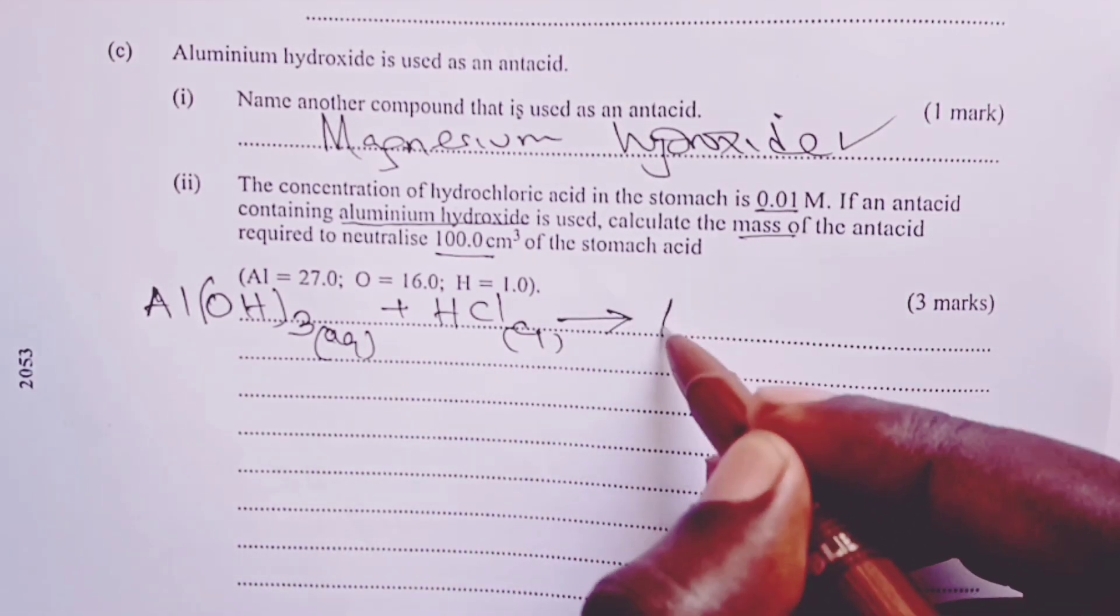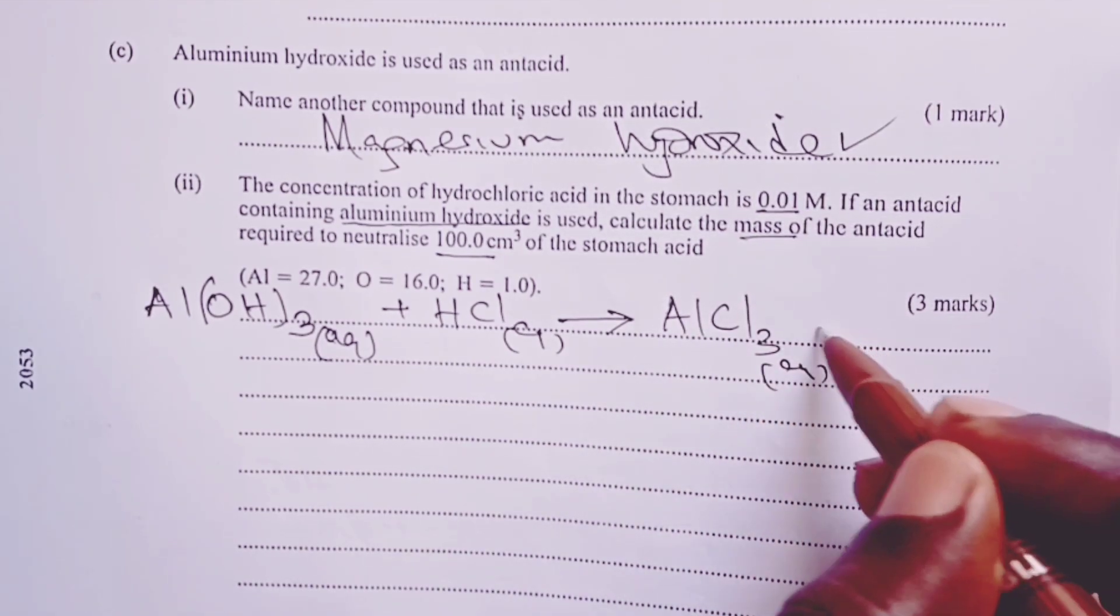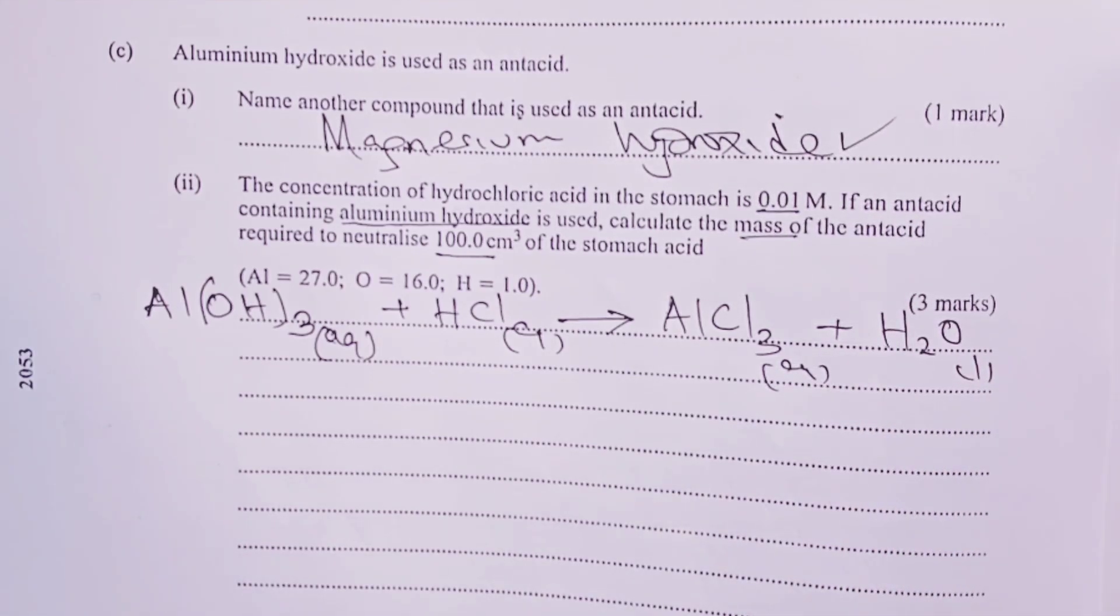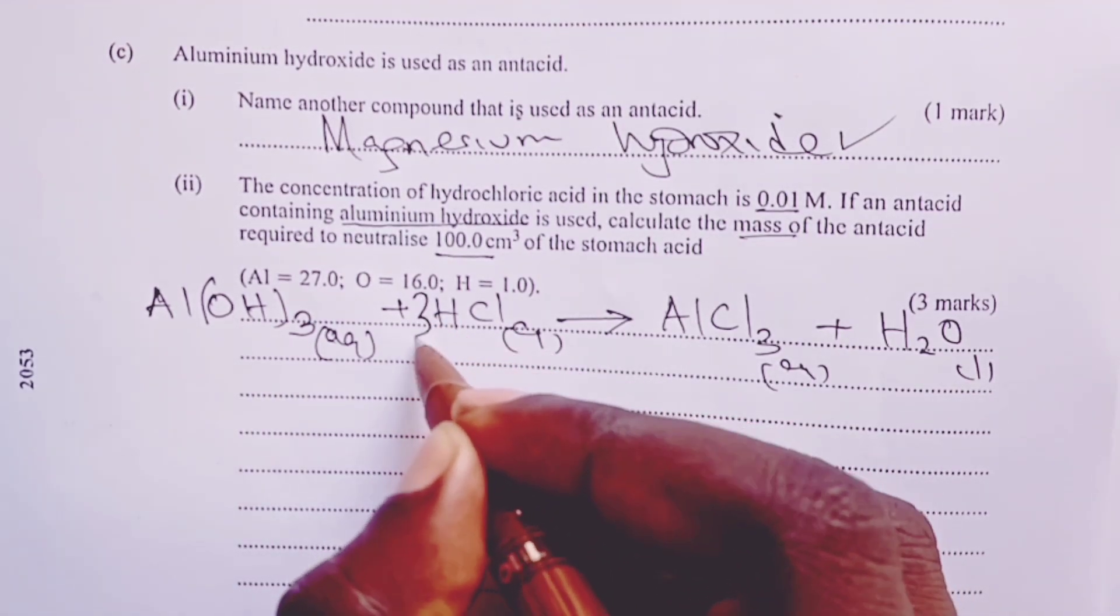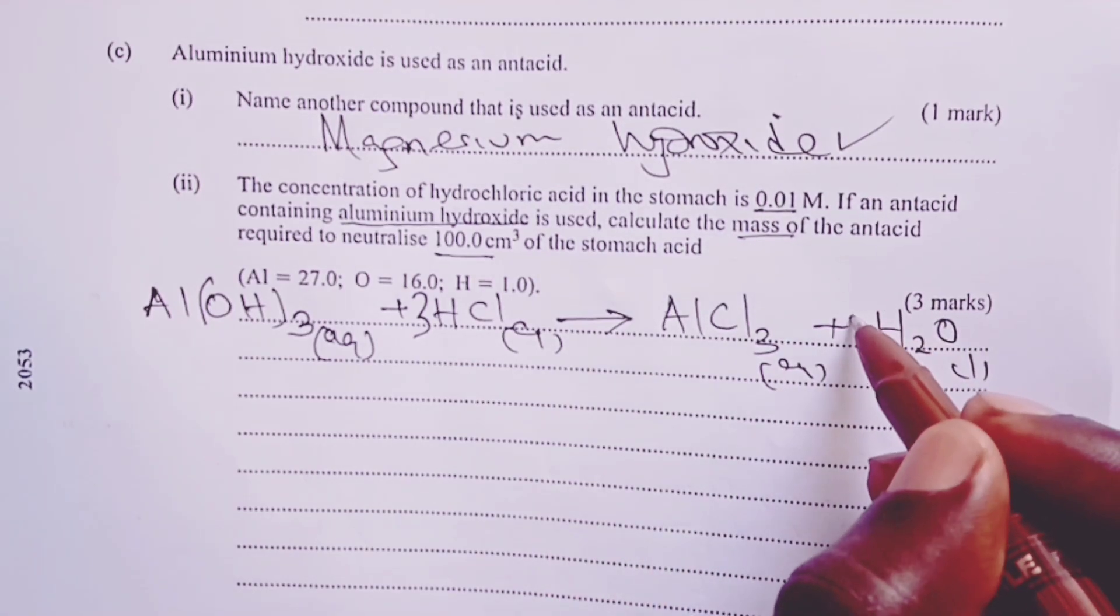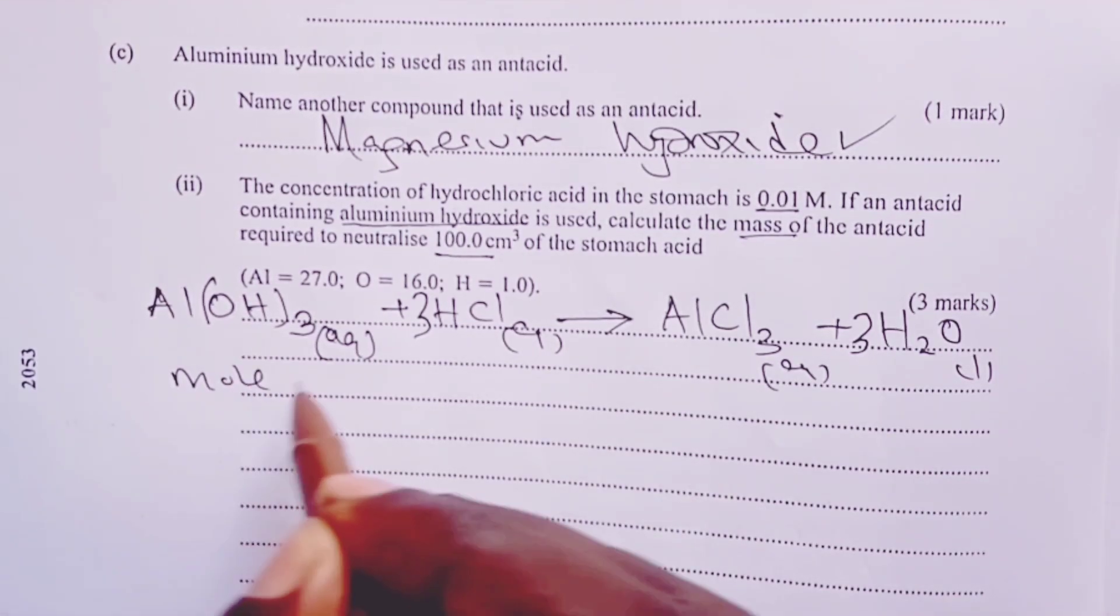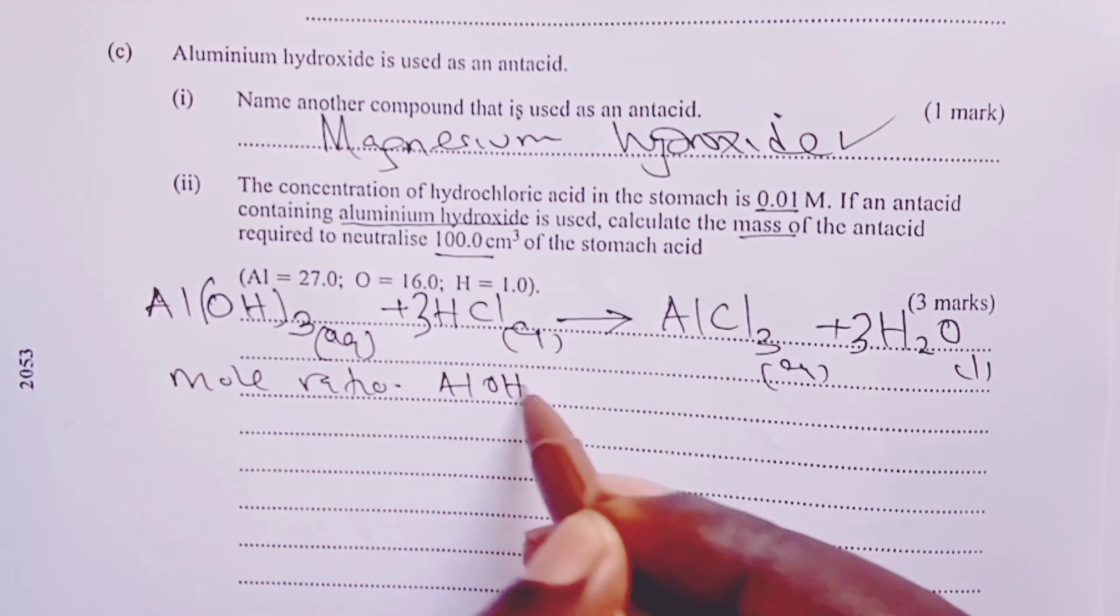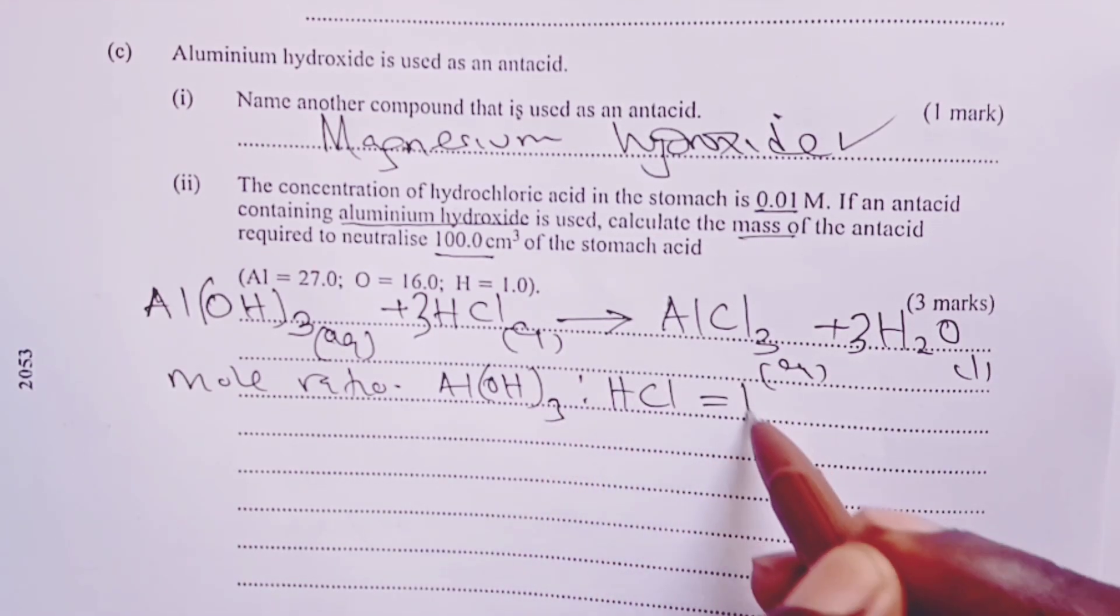So if you react the two, we are supposed to get aluminium chloride and because it is a neutralization reaction, aluminium chloride will be accompanied by some water. To balance, we need a 3 on hydrochloric acid and a 3 on water. The equation is: Al(OH)3 + 3HCl → AlCl3 + 3H2O.